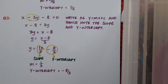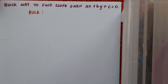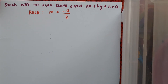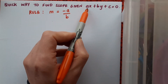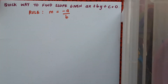That's the first part of our video — rewriting in the form y equals mx plus c to identify slope and y-intercept. There's also a quick way of finding slope when a line is given in the form ax plus by plus c equals 0. This technique can be really useful if you just want to get the slope quickly. The rule is: if the equation is in this format, the slope is minus a over b.